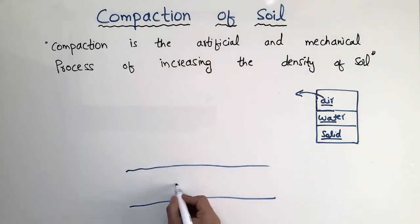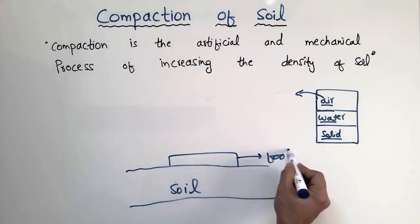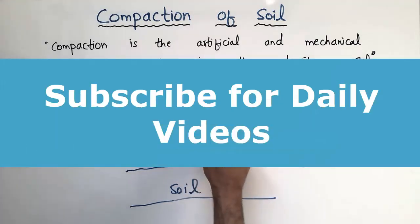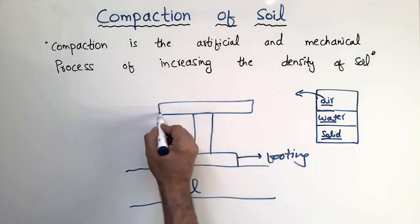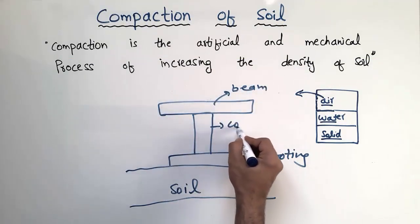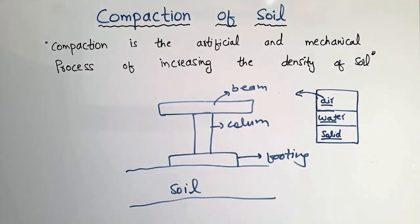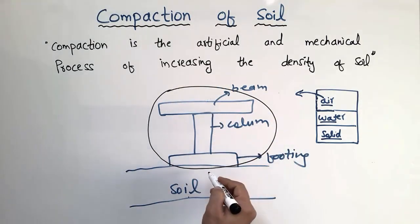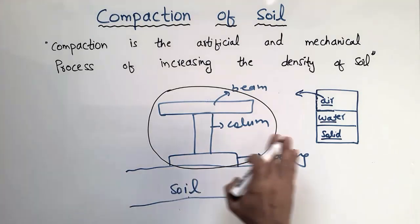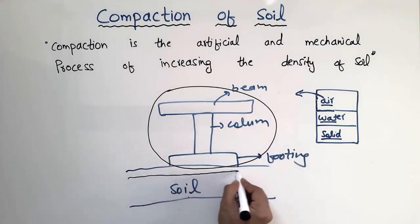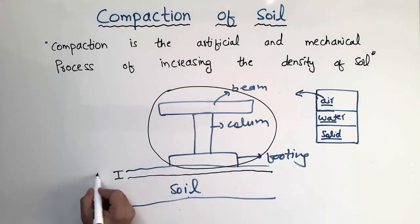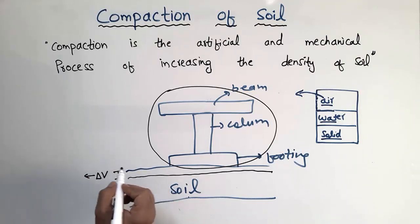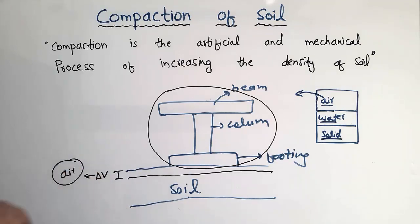Let's consider this is an uncompacted soil mass and we construct a building on top of it — a footing, then a column, and then a beam. Due to the uncompacted soil, the applied load will try to deform the soil. There will be a slight decrease in the volume of the soil mass, represented as delta V, and this decrease in volume is due to the air content present in the soil mass.